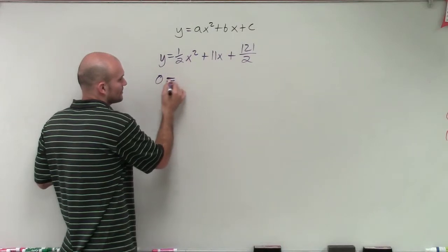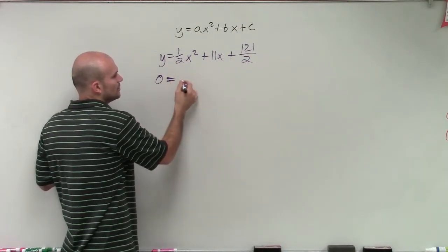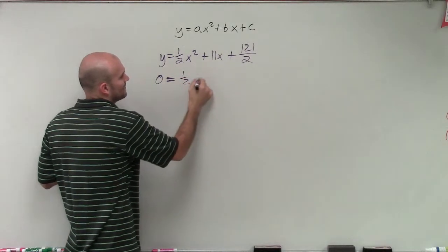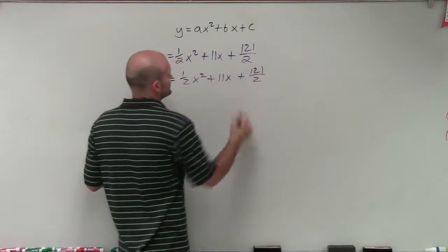So 0 equals 1 half x squared plus 11x plus 121 over 2.